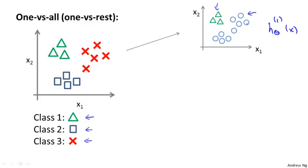So think of the triangles being assigned the value of 1, and the circles the value of 0. And we're just going to train a standard logistic regression classifier, and maybe that will give us a decision boundary that looks like that. The superscript 1 here stands for class 1. So we're doing this for the triangles of the first class.